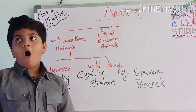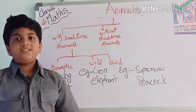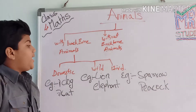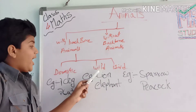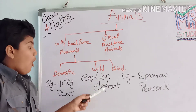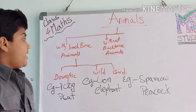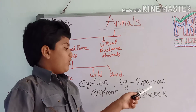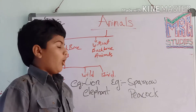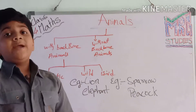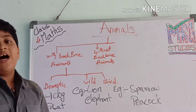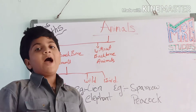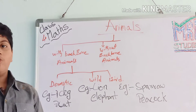Domestic animals: like dogs and their puppies, like kitties. Next, wild animals: lion, elephant. Birds: sparrow, peacock. Peacock has a backbone. Sparrow also has a backbone.